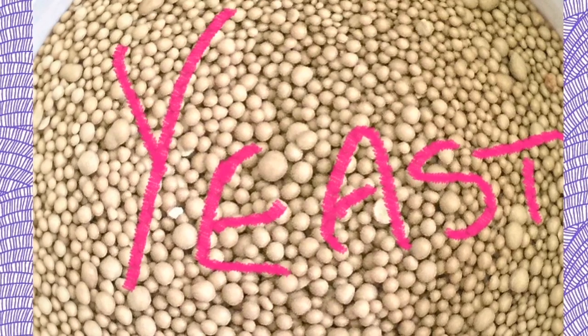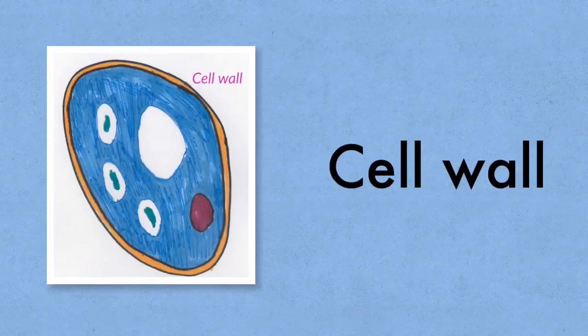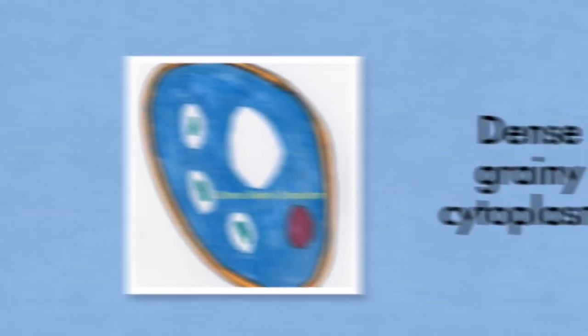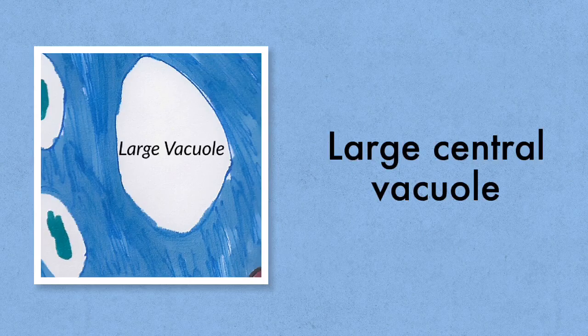On now to yeast, the other type of fungus you need to know a little bit about. Yeast is unicellular, there are no hyphae. Yeast has a cell wall made of chitin, it has one nucleus, it has a dense grainy cytoplasm, it has food vacuoles and it also has a large central vacuole.